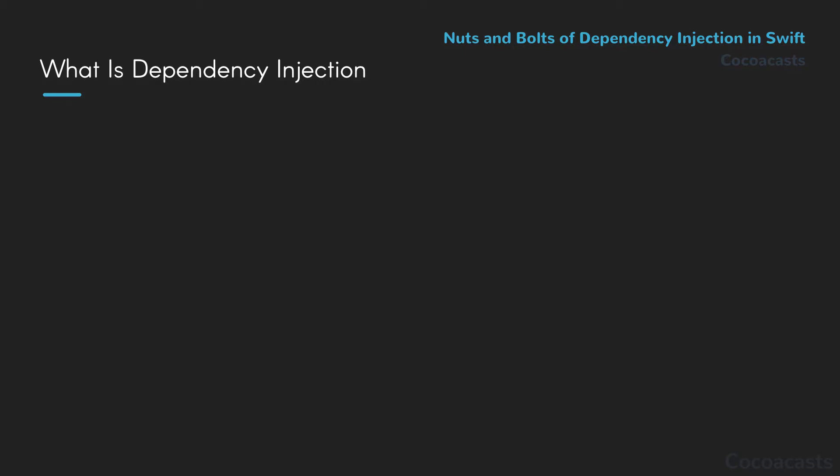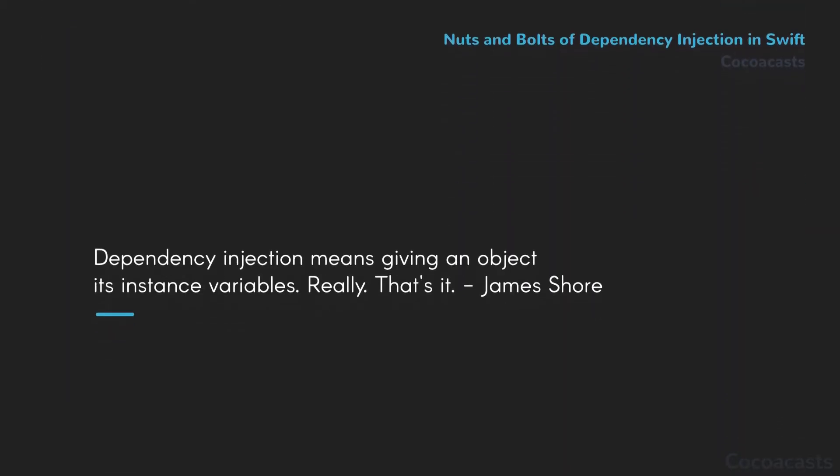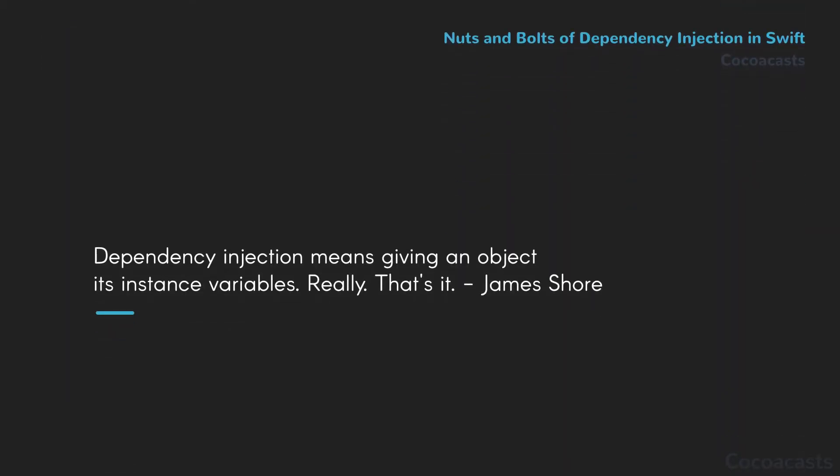I later learned that dependency injection is a simple concept when it's reduced to its bare essentials. James Shore offers a succinct and straightforward definition of dependency injection: dependency injection means giving an object its instance variables. Really, that's it.